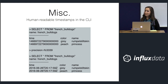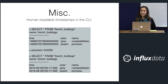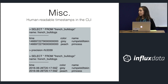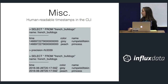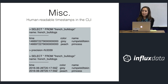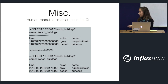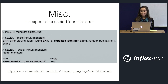Now for two quick tips. The first is how to get human-readable timestamps in the InfluxDB CLI. The command-line interface is the InfluxDB shell for working with the database, and by default it returns timestamps in the unhelpful epoch format. All you have to do is type 'precision rfc3339' and rerun the query, and you'll have beautifully formatted timestamps.